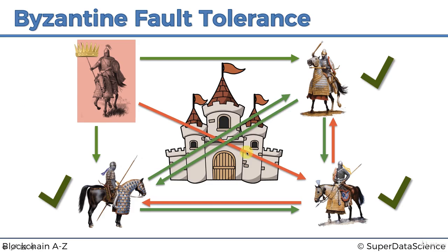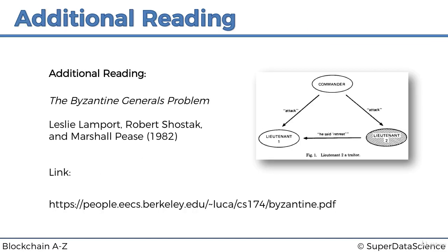So it's a huge concept — even though it looks simple, like an airy-fairy story about some generals in the Byzantine Empire, it's actually a huge thing in terms of decentralized systems and systems with lots of components. Blockchain is just one of them. For further reading, there's the original paper 'The Byzantine Generals Problem' from 1982 by Lamport, Shostak, and Pease — it's an interesting paper with some logical mathematical proofs.